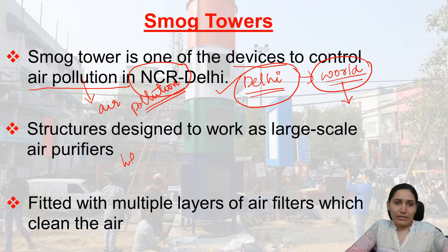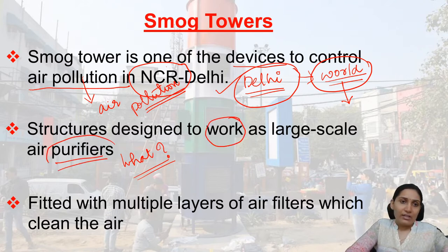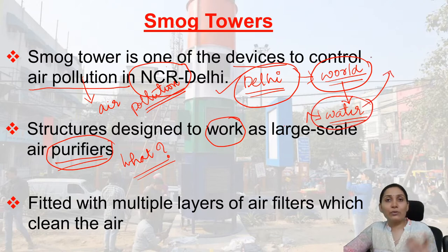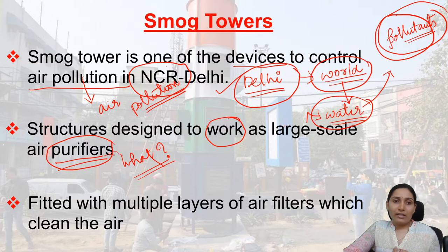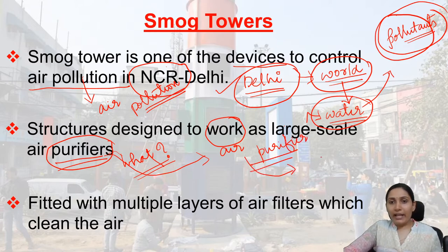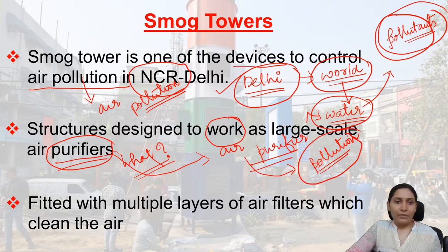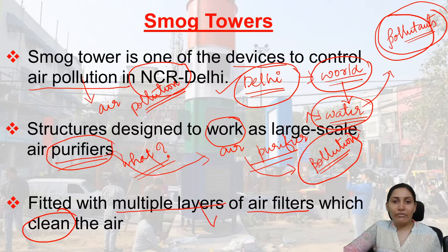What are smog towers? Smog towers are structures designed to work as large-scale air purifiers. Just as water purifiers remove pollutants from water, smog towers act as air purifiers — their purpose is to purify the air from any kind of pollution. They are fitted with multiple layers of air filters which clean the air.